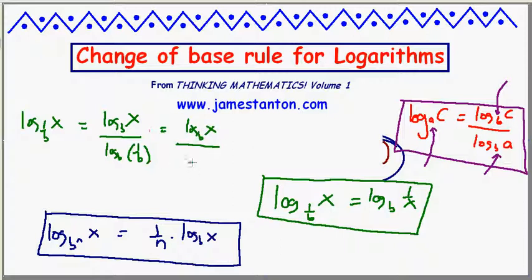Well, log base b of x, the denominator here is negative one. So this is negative log base b of x. Let's bring the exponent upstairs. This tells me this is log base b of x to the negative one, one over x. Kind of cool.